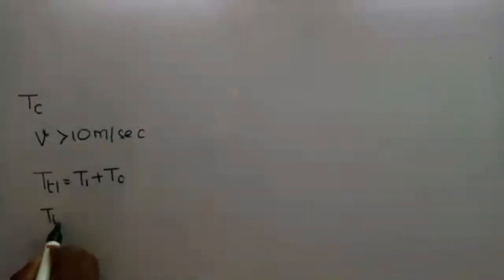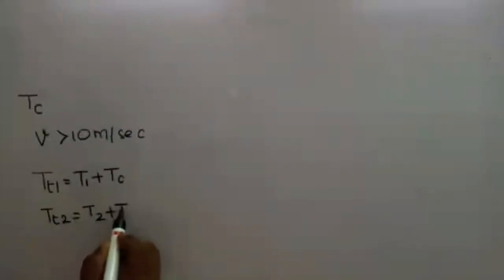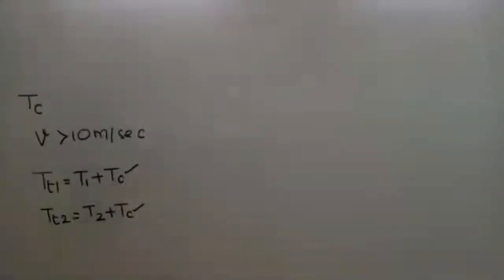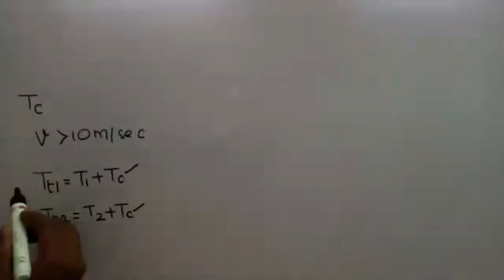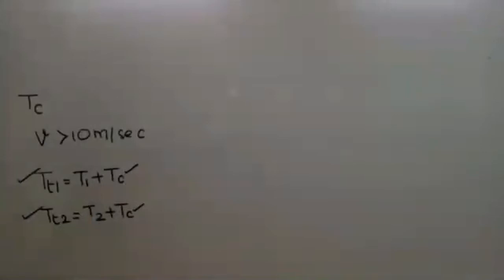Similarly, total tension on the slack side TT2 is equal to T2 plus Tc. So this extra component Tc is added to the already existing tensions T1 and T2. The total tension on the tight side is TT1 and total tension on the slack side is TT2. Now, what do we mean by maximum tension in the belt, and how is it related to the tensions on the slack and tight sides?